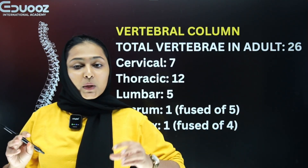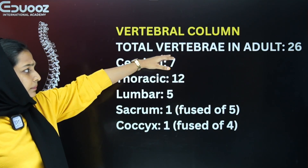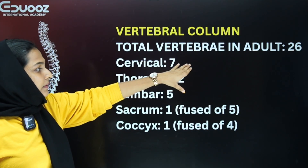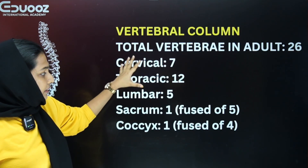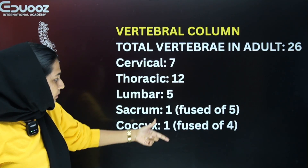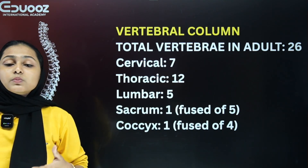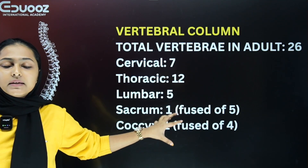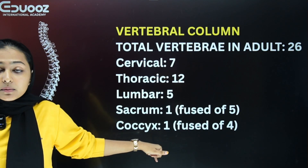Now let's think about the vertebral column and its numbers. Cervical: 7, thoracic: 12, lumbar: 5, sacrum: 1, coccyx: 1. That is the vertebral column breakdown.